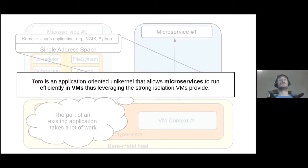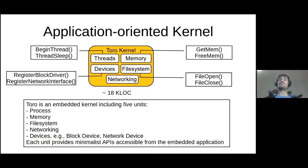In this context, Toro is a unikernel that provides a minimalistic API to develop microservices. Toro is an application-oriented kernel which provides a minimalistic API to write applications. The unikernel is mainly made of five modules. For example, the threads unit allows the manipulation of threads, and the memory unit allows the allocation of memory. The whole kernel is about 18 kilolines of code.